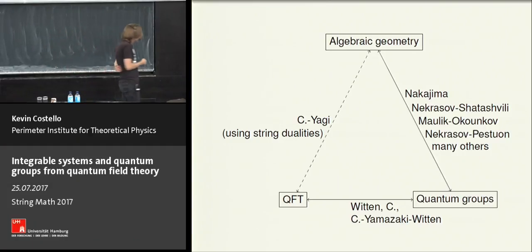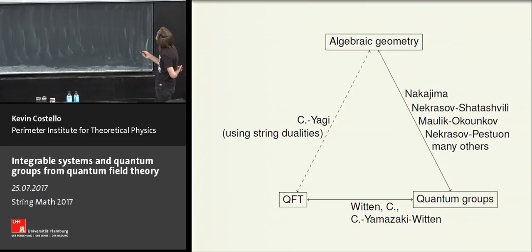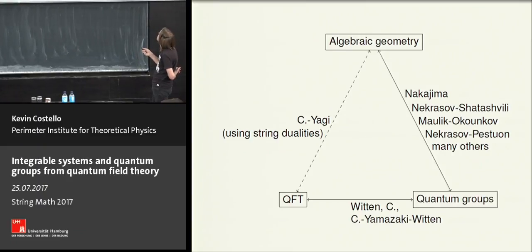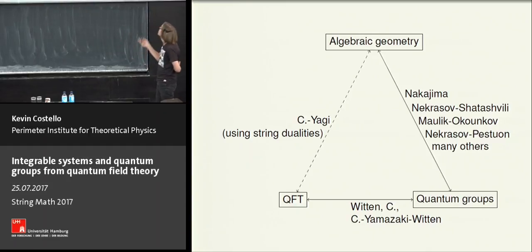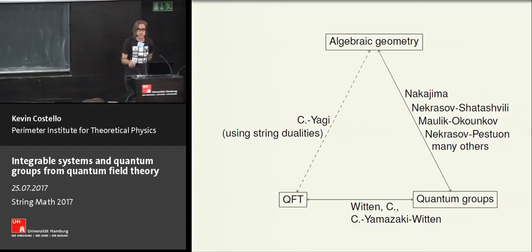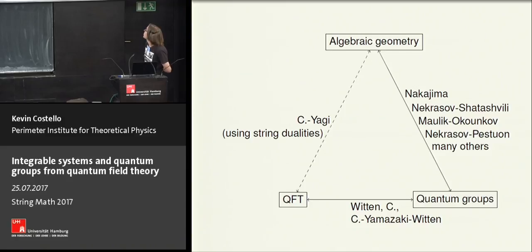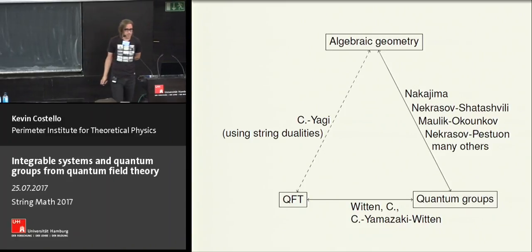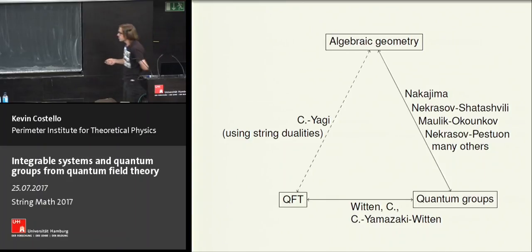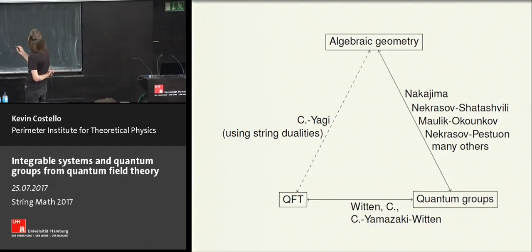In parallel, there's been a very active development relating algebraic geometry, particularly the study of quiver varieties and quantum groups. This is a huge field and I've just listed some of the more prominent authors. The goal of today's talk is to show how the quantum field theories we're considering can be linked directly to the algebraic geometry by embedding them into string theory and using string dualities.